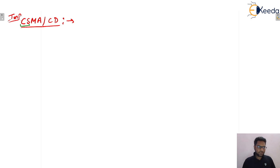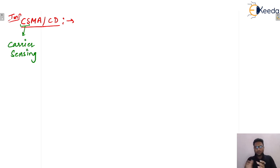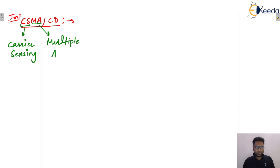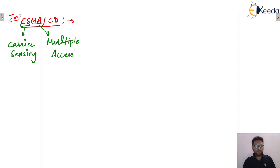CS stands for Carrier Sensing. Carrier means channel — the channel carries the data, that's why it is known as a carrier. MA stands for Multiple Access, meaning multiple stations are accessing the channel — that is, it is a broadcast channel. And CD stands for Collision Detection.